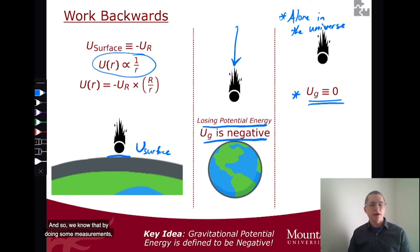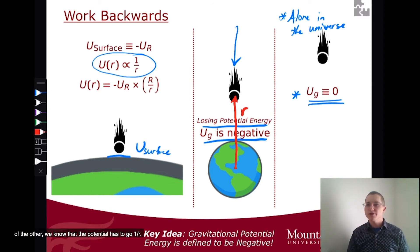And so we know that by doing some measurements that is proportional or inversely proportional to the distance between the two objects. So if I draw a vector from the center of one to the center of the other, we know that the potential has to go as one over R.